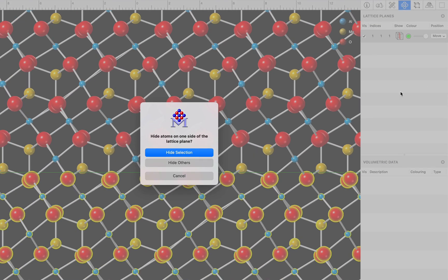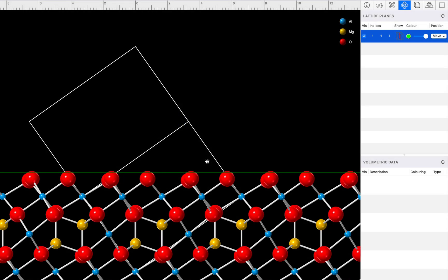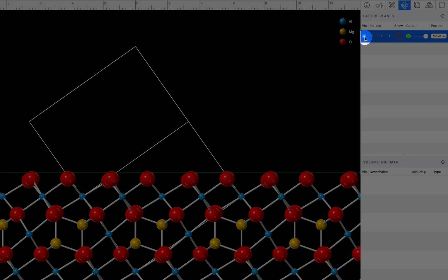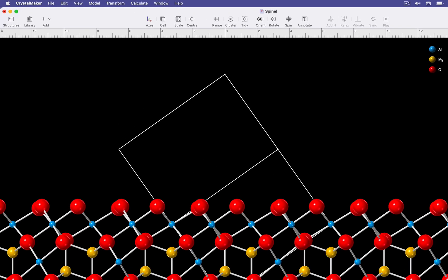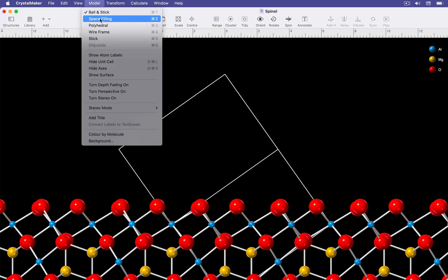I'm going to hide the atoms on top, those are the unselected atoms. Hide others. And now I'll hide the lattice plane by unclicking its visibility checkbox. And we'll switch back to our original space-filling view.